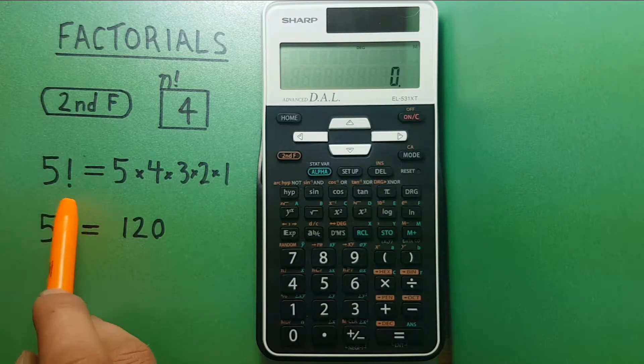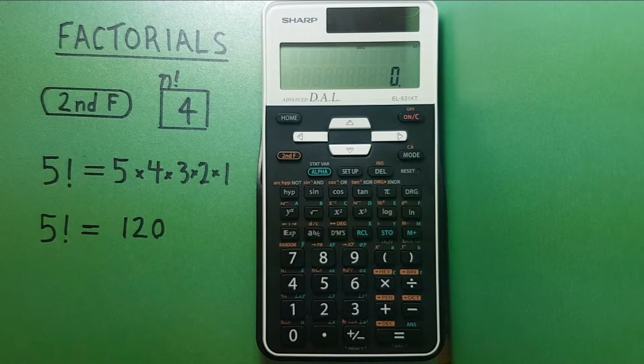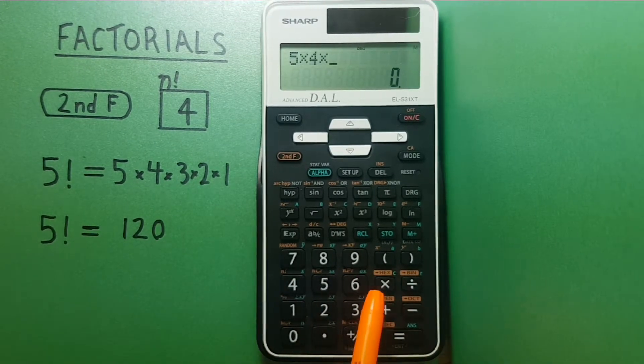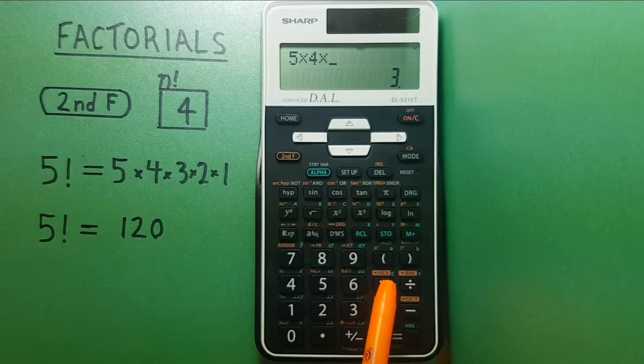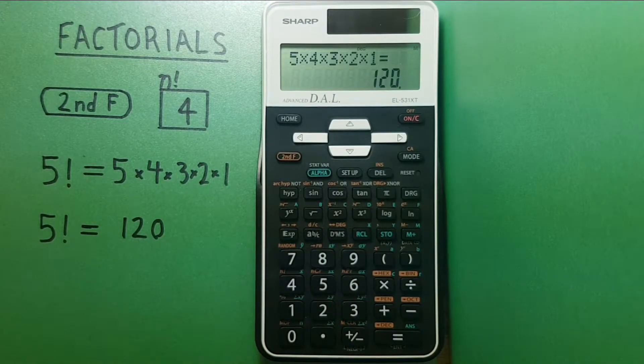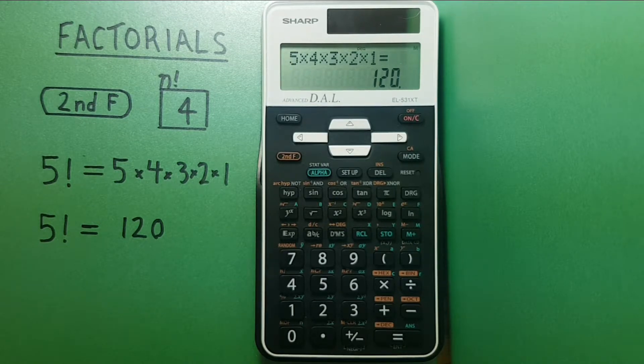We can confirm this by multiplying out all the numbers. So if we go 5 times 4 times 3 times 2 times 1 equals 120. So we know we got the right answer.